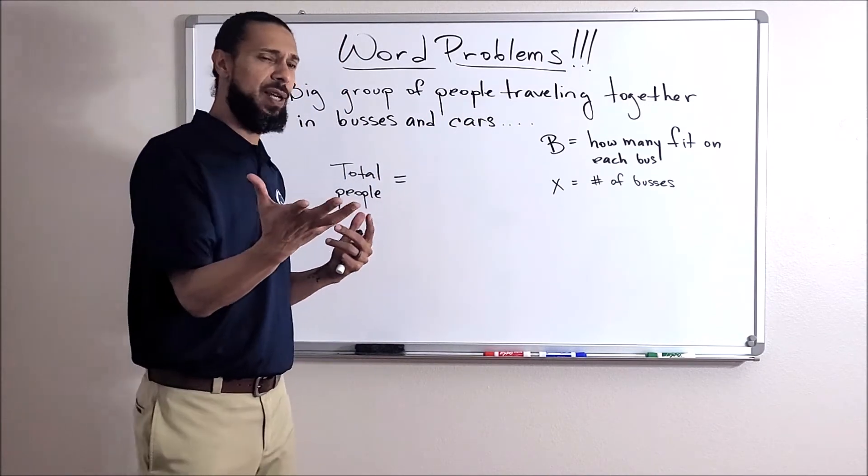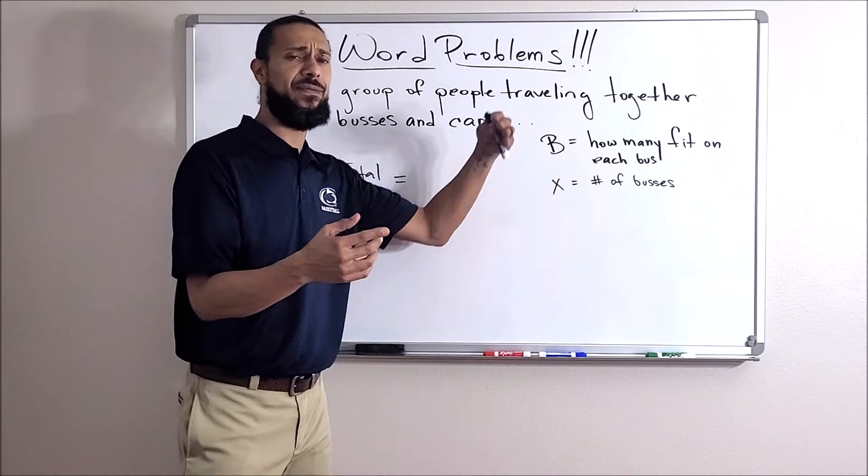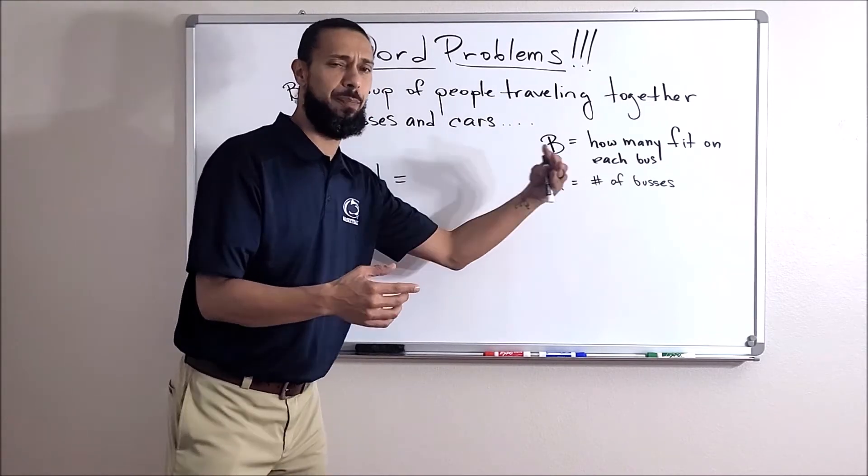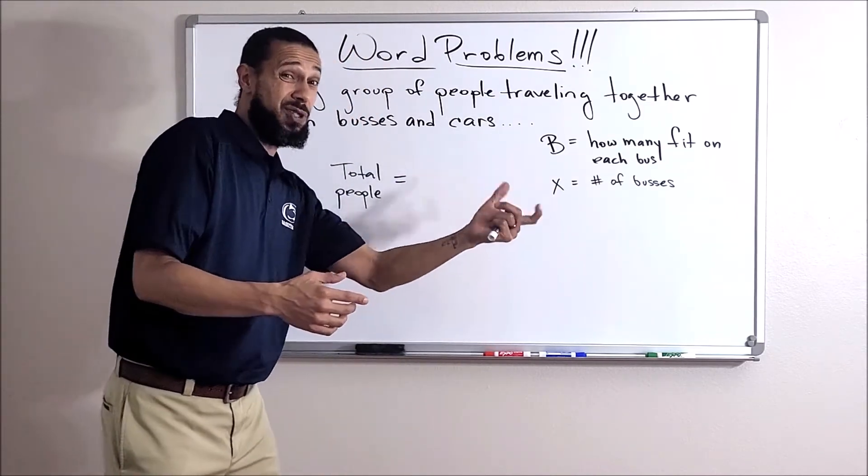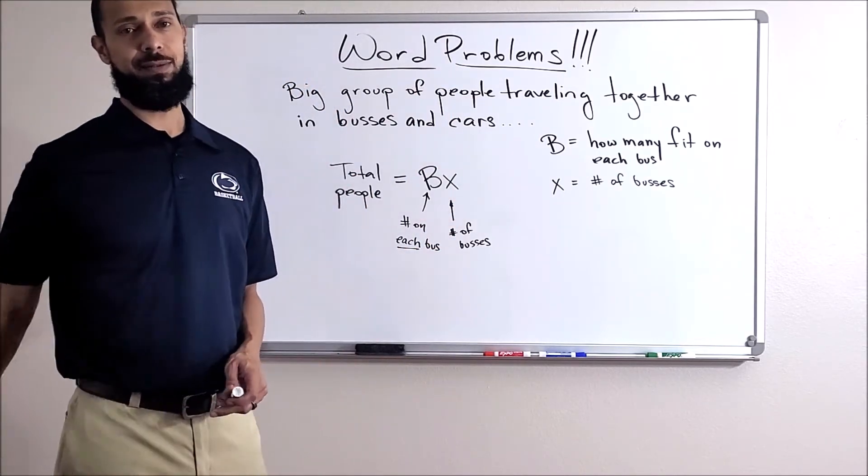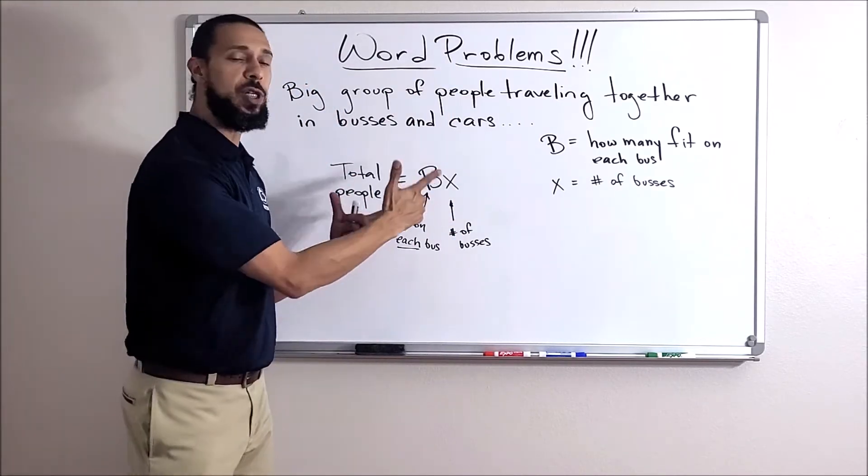Here we go. So the total number of people on buses - how can we get that? If I know B is how many fit on each bus and X is the number of buses, wouldn't I just multiply them together? Just like that, just like that.